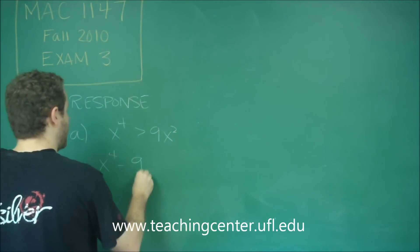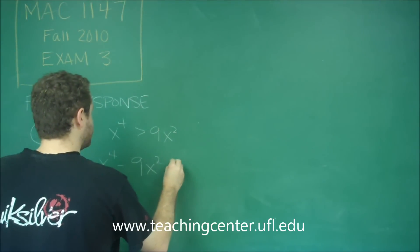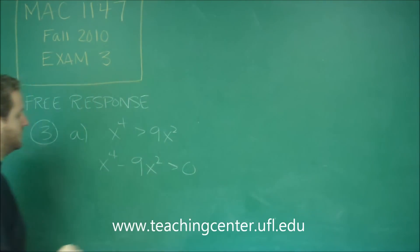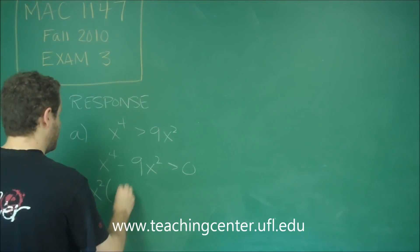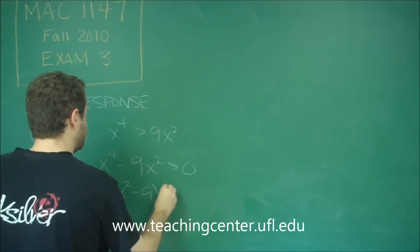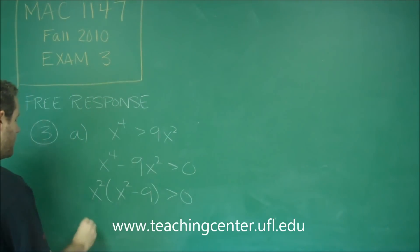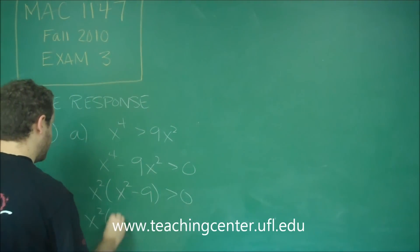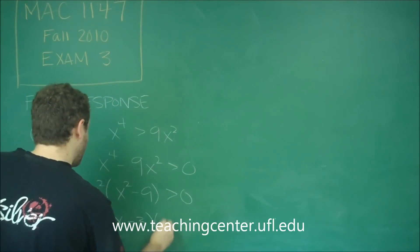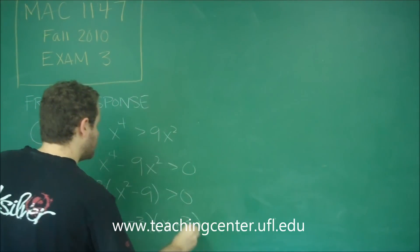So what we're going to do is subtract it over and say greater than or equal to 0. Now we're ready to solve this, because this can be easily factored. We can take out an x squared and be left with x squared minus 9. We can further say that x squared minus 9 is x minus 3, x plus 3.